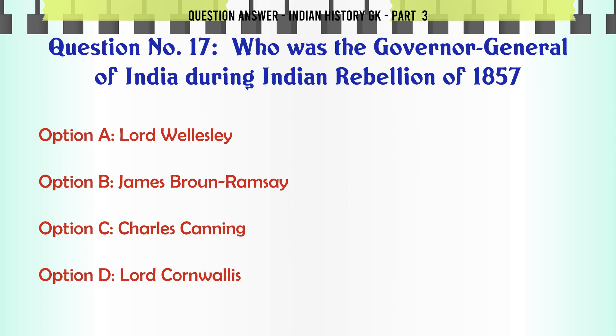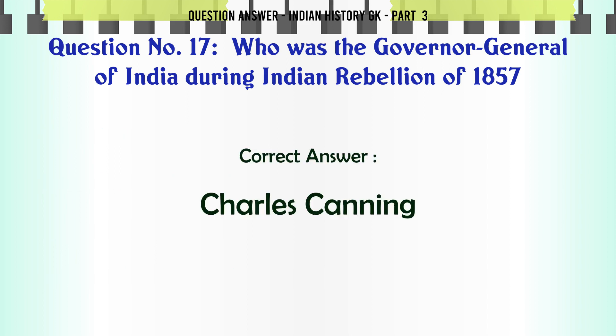Who was the Governor-General of India during the Indian Rebellion of 1857? A. Lord Wellesley, B. James Brown Ramsay, C. Charles Canning, D. Lord Cornwallis. The correct answer is Charles Canning.